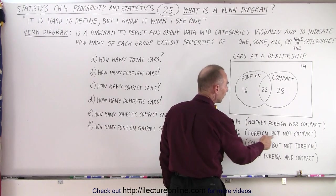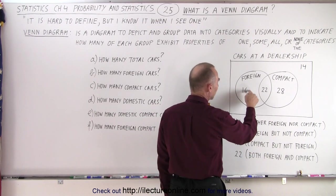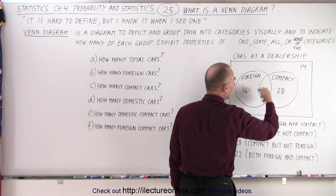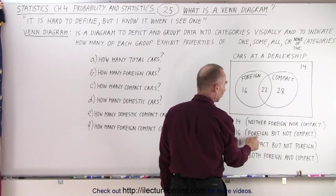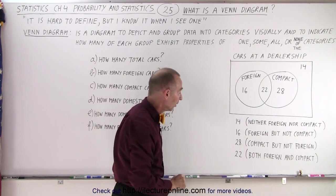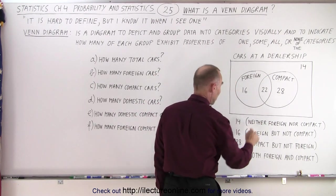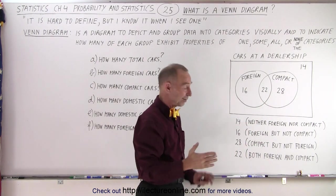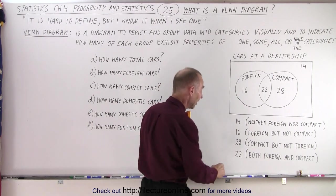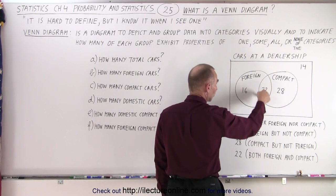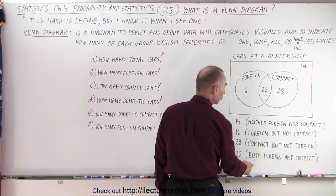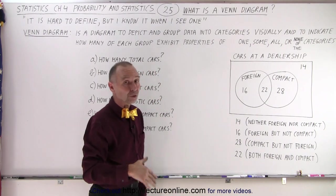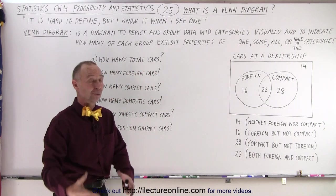16 are foreign cars but not compact — if they were compact they would also be inside the compact circle, so there are 16 foreign cars that are not compact. The 28 means you have 28 compact cars but they're not foreign cars, so presumably they're domestic. And finally, 22 is where we have an intersection — they're both foreign and compact. So there are 22 cars that are both foreign and compact.